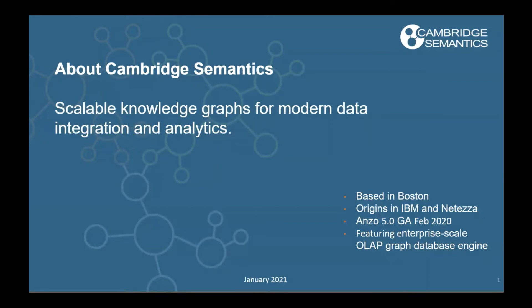A little bit about our company here at Cambridge Semantics. We're founded really by the union of two groups. The first group, which has its origins at IBM, was working on using graph and semantic technologies. They founded the company around a dozen years ago. And then about four or five years ago, they acquired a group with origins in Natiza that had been working on building a very scalable graph database.